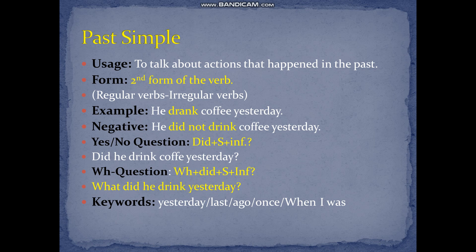regular verbs and irregular verbs. For example, we say 'he drank coffee yesterday.' The verb 'drink' is an irregular verb. In the negative, we just add 'did not' before the infinitive verb, so it will be: